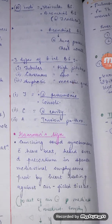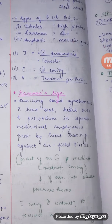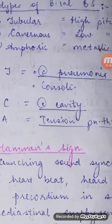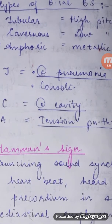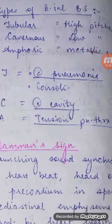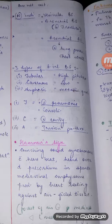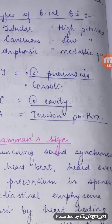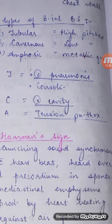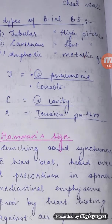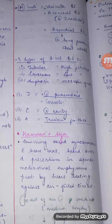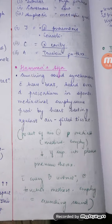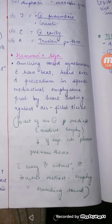Bronchial breath sounds are of three types: tubular, cavernous, and amphoric. Tubular is high pitch, seen in consolidation like pneumonia. Cavernous is low pitch — C for cavernous, C for cavity. Amphoric has a metallic quality and is seen in tension pneumothorax.